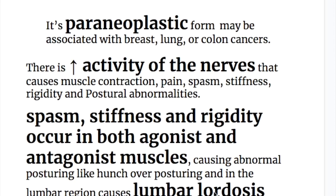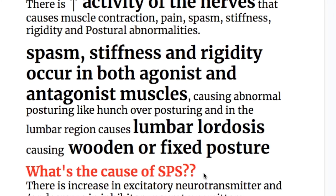There is increased activity of nerves that cause muscle contraction, pain, spasm, stiffness, rigidity, and postural abnormalities. Spasm, stiffness, and rigidity occur in both agonist and antagonist muscles, causing abnormal posturing like hunchover posturing, and in the lumbar region causes lumbar lordosis, resulting in a wooden or fixed posture.